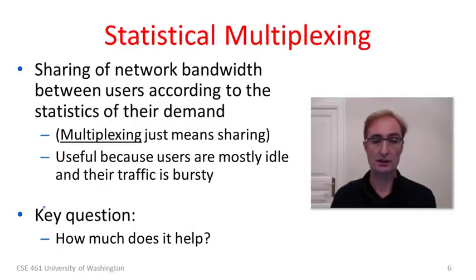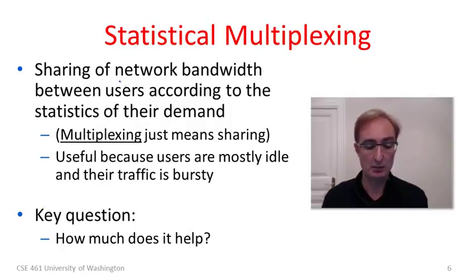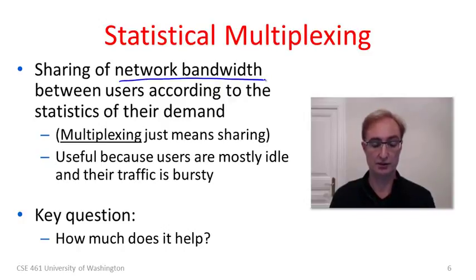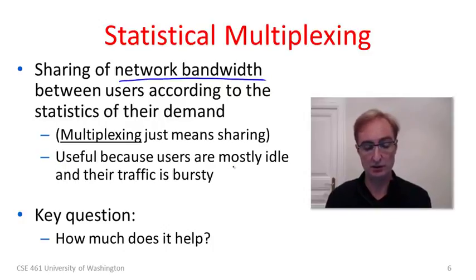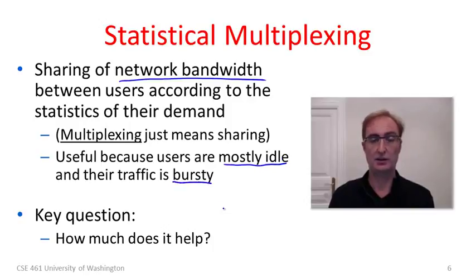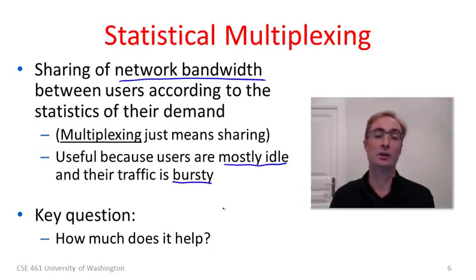Statistical multiplexing is the sharing of network bandwidth between different users according to the statistics of their demand. Multiplexing is just the networking word for sharing a resource. Sharing according to statistics is useful because users are mostly idle — if you look at your traffic at a fine grain, you're mostly not using the network. And even when you are, the user's traffic is bursty, occurring in little bursts, such that we can typically have many users on the network together with few ill effects.